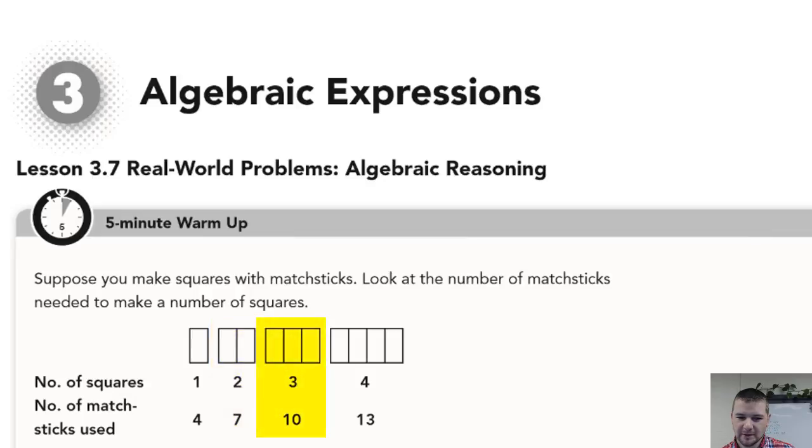With three squares, well, we begin with the original two, which took seven matchsticks, and then to add one more square, well, like before, we're just adding three more matchsticks for a total of ten, and that pattern continues.